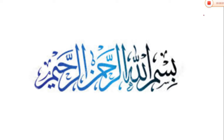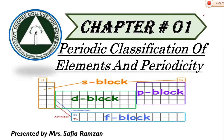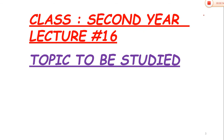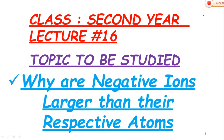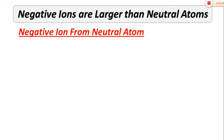Bismillahir Rahmanir Raheem. Assalamualaikum dear students. Hope you all are fine. We are discussing chapter number 1. The name of the chapter is periodic classification of elements and periodicity. I am going to start lecture number 16 from this chapter. Only one topic will be discussed in detail: why are negative ions larger than their respective atoms? So let's start.